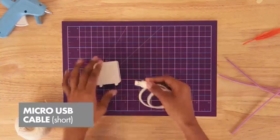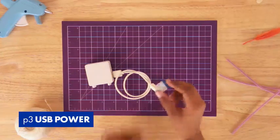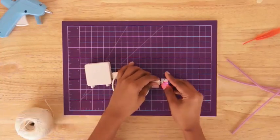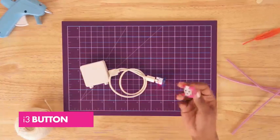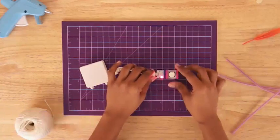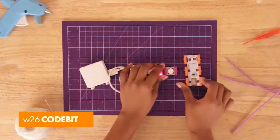Connect your battery to your USB power bit with a USB cable. Now snap the button to your power. Let's snap the power and the button into IN2 on the code bit.